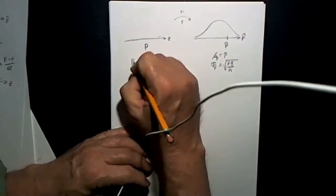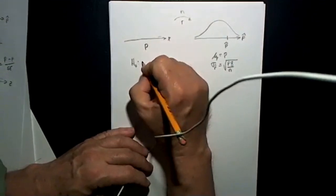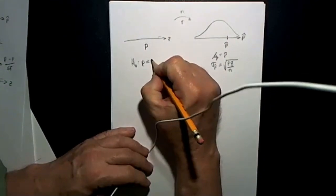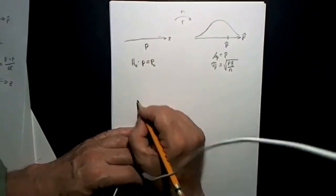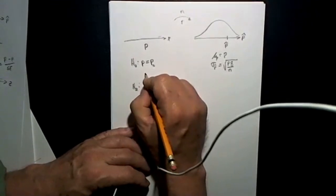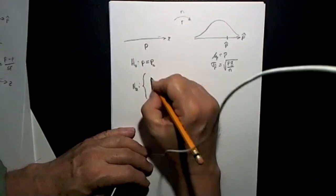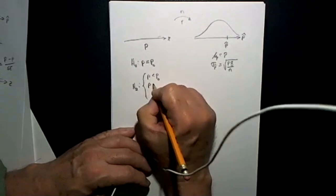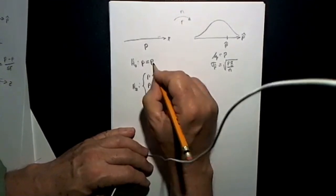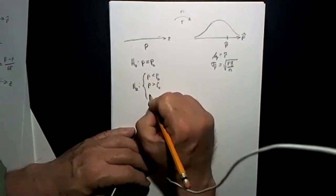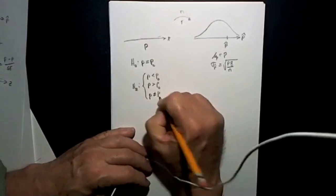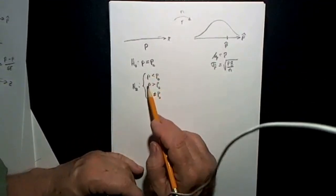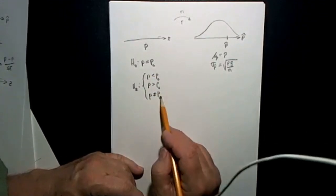In a hypothesis test, we're going to have a null hypothesis which says that the proportion is equal to some particular value — I'll call that p-sub-zero. There's also going to be an alternative hypothesis, which will be one of three types: p is less than p-zero (a lower-tailed test), p is greater than p-zero (an upper-tailed test), or p is not equal to p-zero (a two-tailed test).